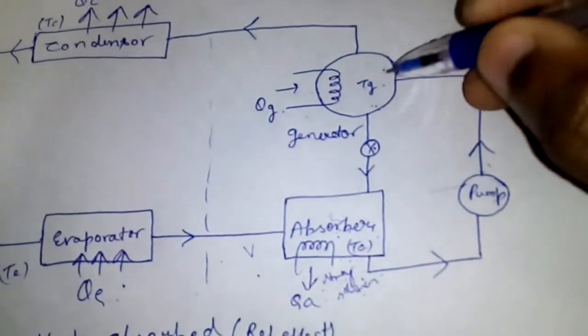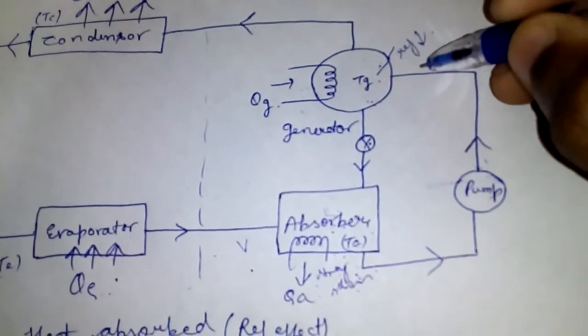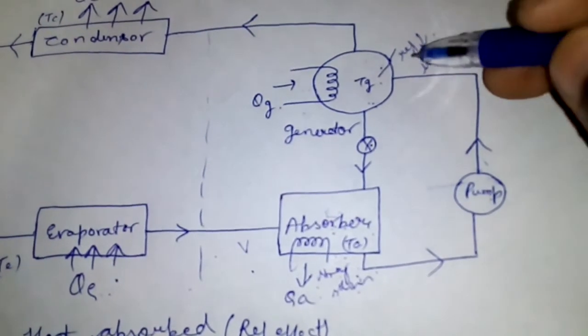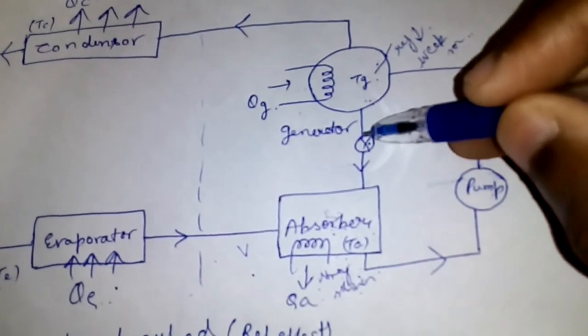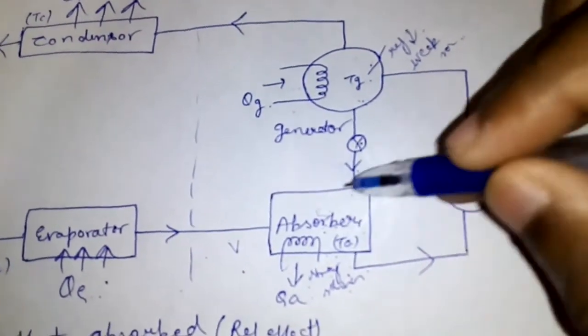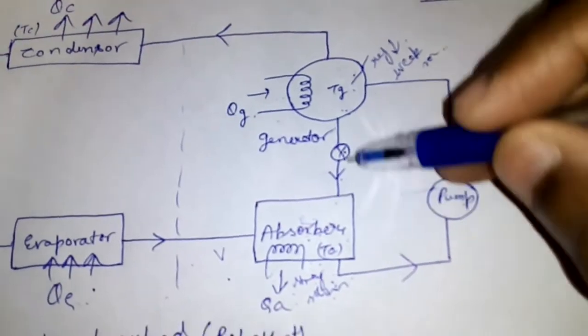The concentration of refrigerant will reduce here, so it will be called weak solution. Now this weak solution will be pumped back by a pressure reducing valve at the same absorber pressure by this line.